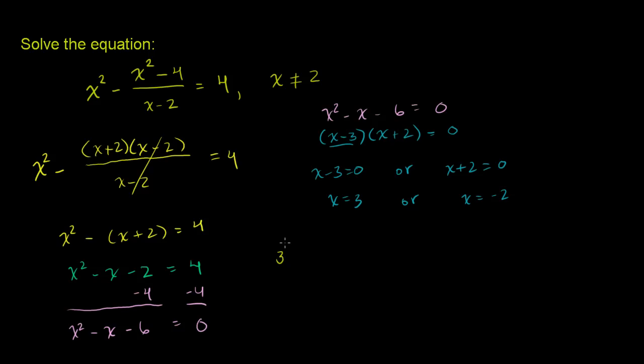Let's try x equals 3 first. You get 3 squared minus (3 squared minus 4) over (3 minus 2). So this is equal to 9 minus (9 minus 4, which is 5) over 1. So 9 minus 5, which is equal to 4, which is exactly what we needed to equal.